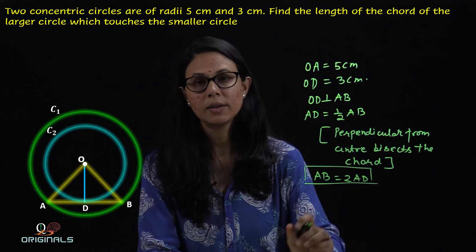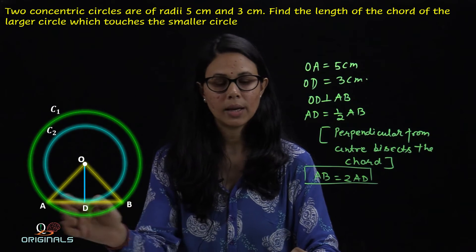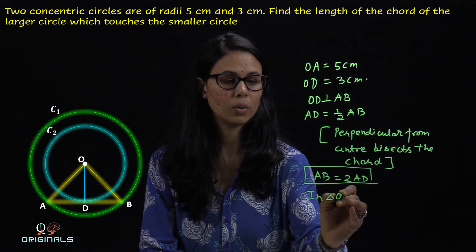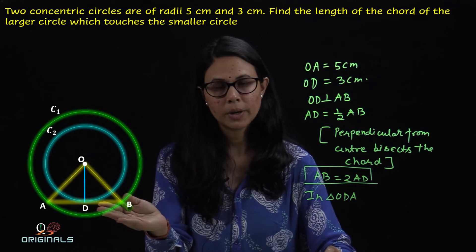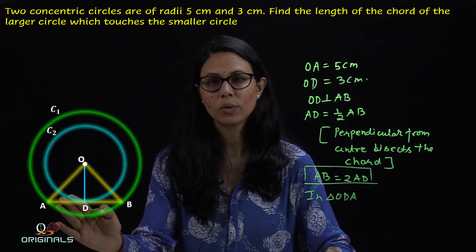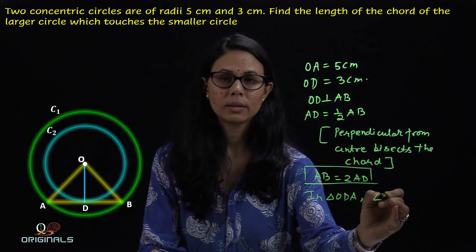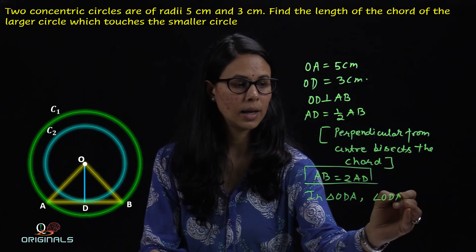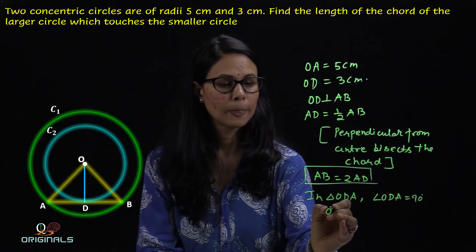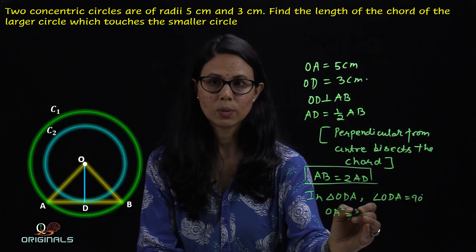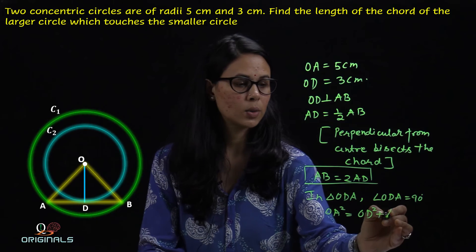अब हम निकालेंगे AD की value. In triangle ODA — OD, AB पर perpendicular है — it means angle ODA जो है वो 90 degree होगा. तो angle ODA is equal to 90 degree.